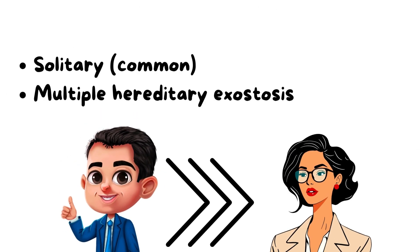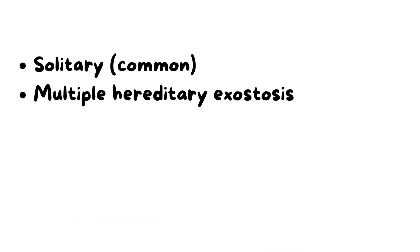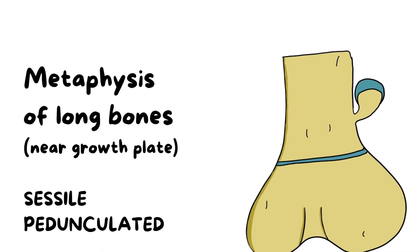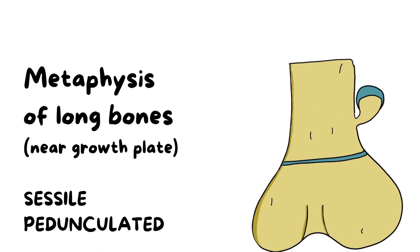The usual types are solitary and multiple. In the solitary type, which is the most common, only one exostosis is seen in the body. Whereas if there are multiple exostoses seen in the body, it is known as multiple hereditary exostosis. Osteochondromas are more commonly seen in men than women.